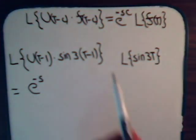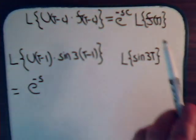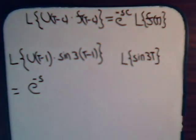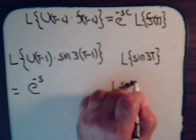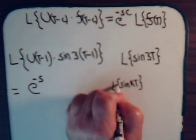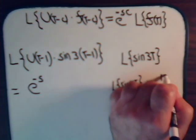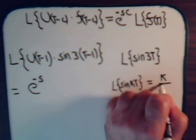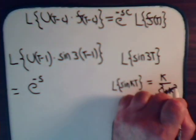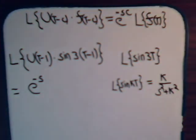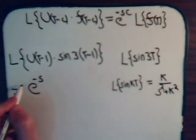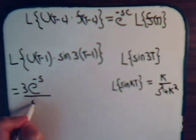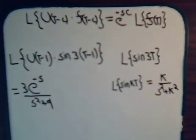That's what our formula tells us. We don't take the Laplace transform of f(t-c); it's just the Laplace transform of f(t). Remember, the Laplace transform of sin(kt) is k divided by s squared plus k squared. For our example, k equals 3, so we're going to have 3 over (s squared plus 9). Multiplying through, there's our solution.